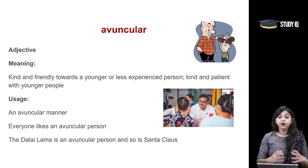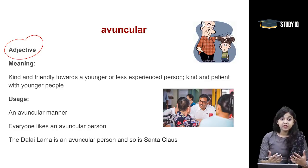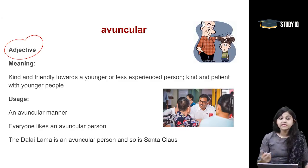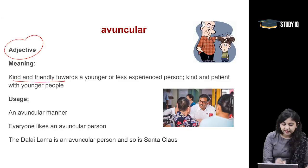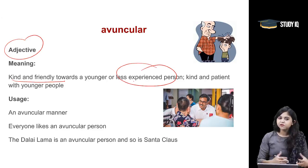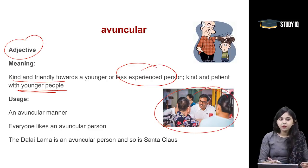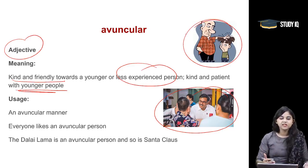Starting with the first word of the day: Avuncular. Avuncular is an adjective meaning very kind and patient, especially towards a person who is inexperienced or younger. Avuncular is also used to describe uncles and aunties because they are very patient. This adjective describes someone who is kind and friendly towards a younger or less experienced person. As you can see in this image, he is patient with other people, especially inexperienced people, and the person is being very kind and patient with someone who is younger.